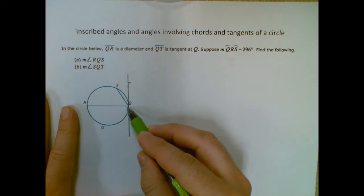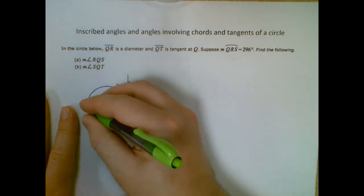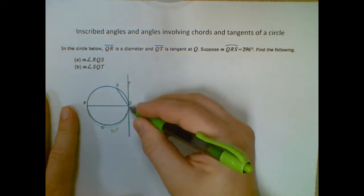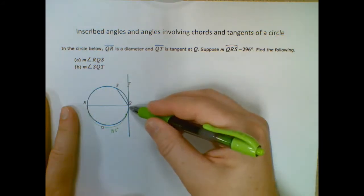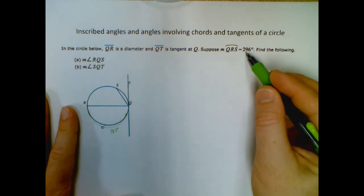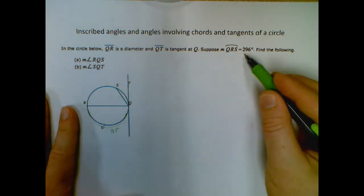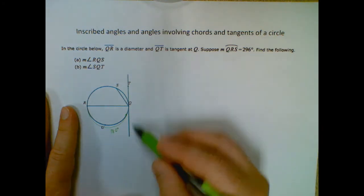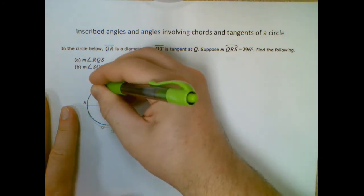And the answer is the fact that we know this is a diameter. This whole thing has to be 180 degrees. So if it's 296, whatever's past 180 has to be right here. So I'm going to take that 296 and subtract 180 and find out that this has to be 116 degrees.